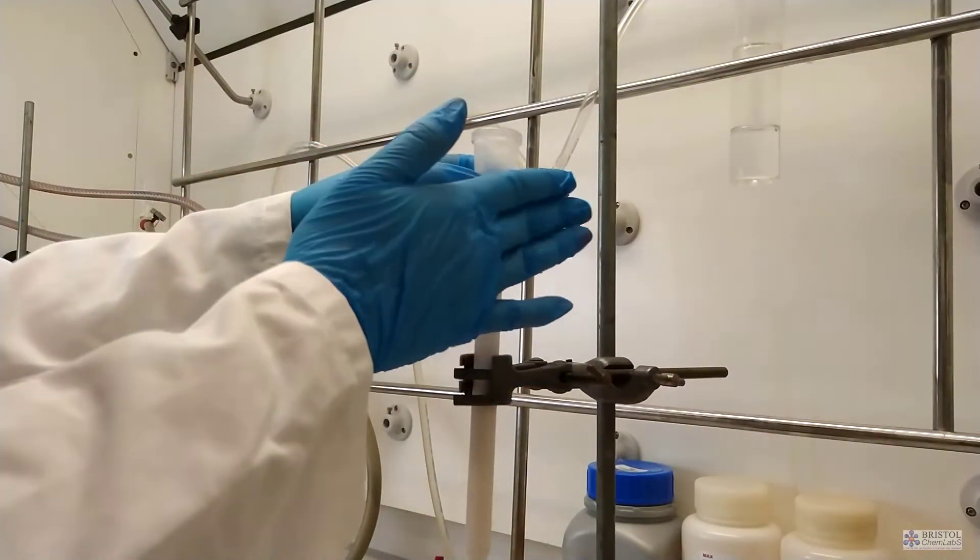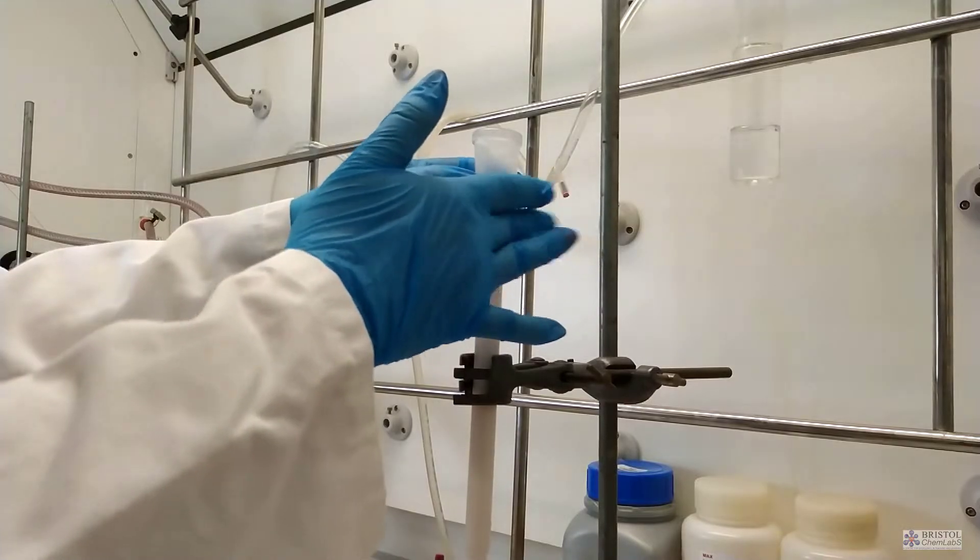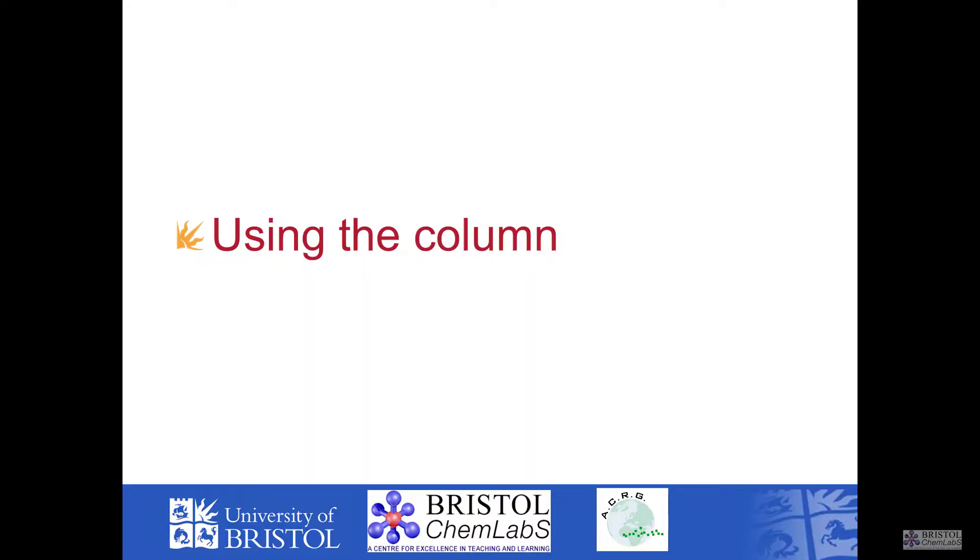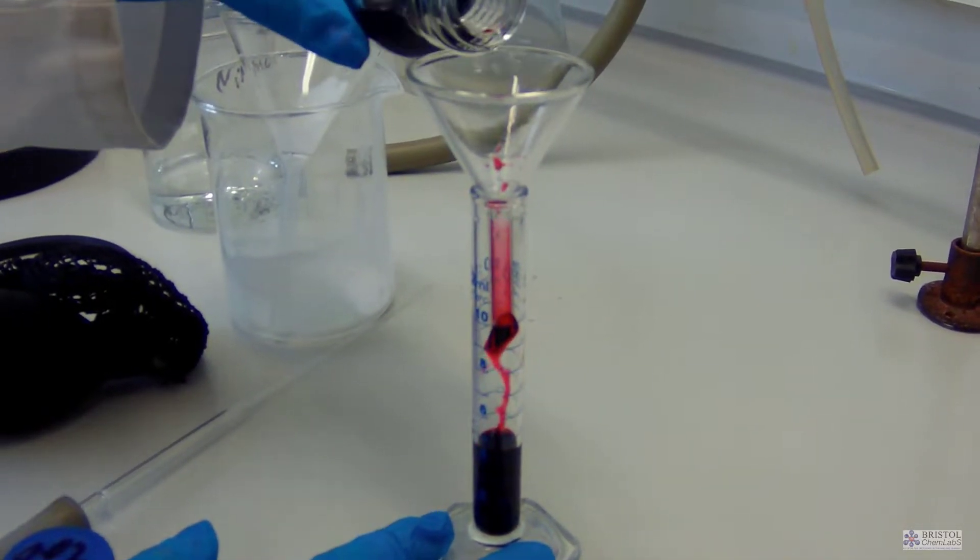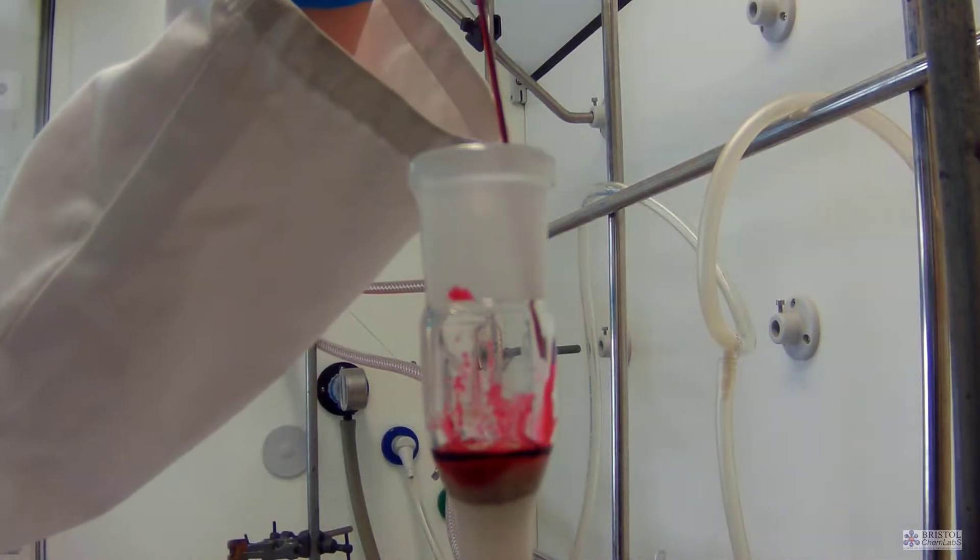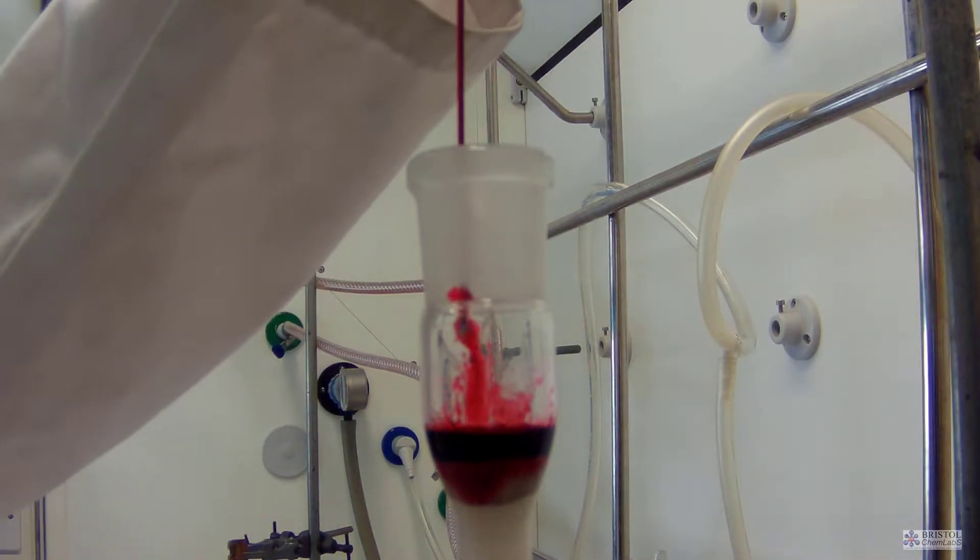The mixture to be separated here is an equivolume mixture of 0.05 molar potassium chromate 6 and potassium manganate 7.